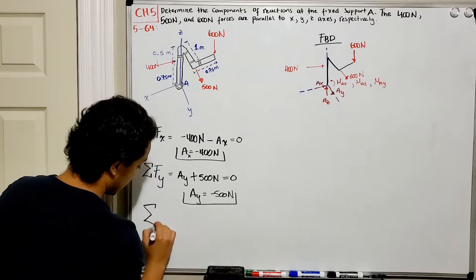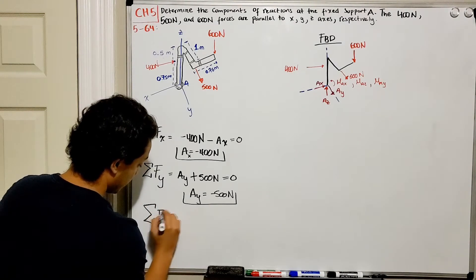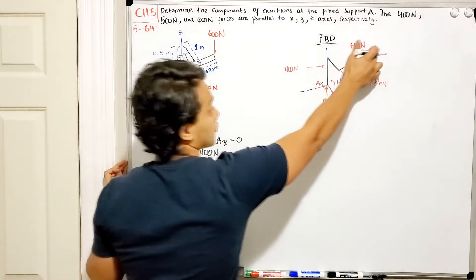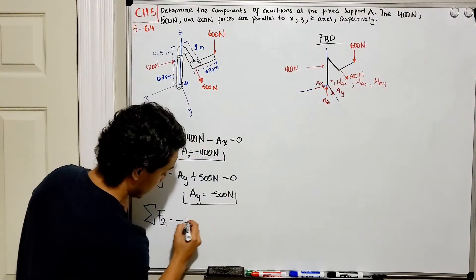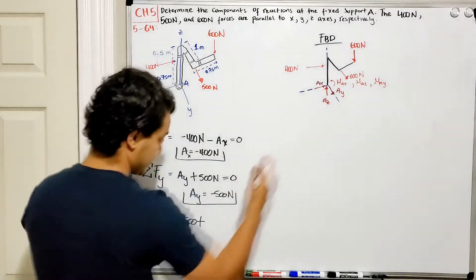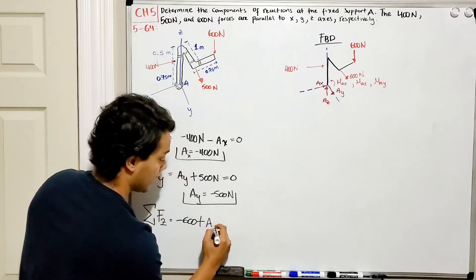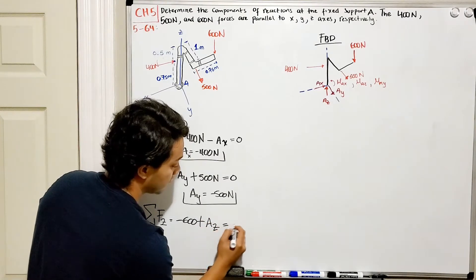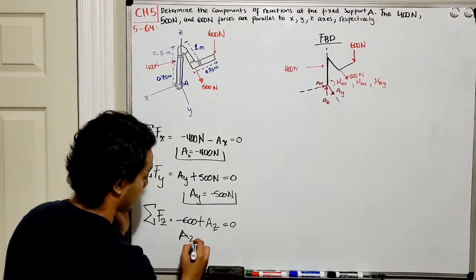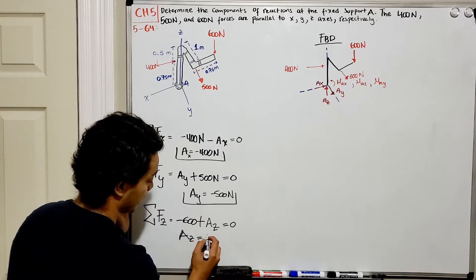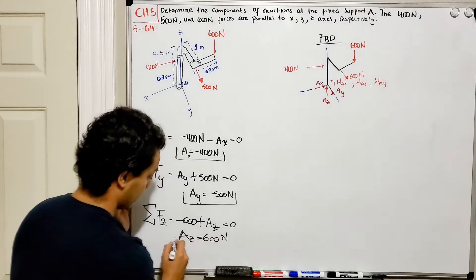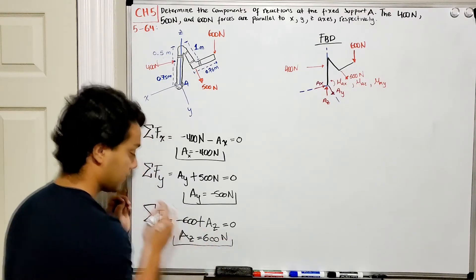Then let's find the summation of forces in the Z direction. I have 600 Newtons going down, so negative 600, plus AZ going up. Setting this equal to zero, AZ equals positive 600 Newtons. That is our third reaction.